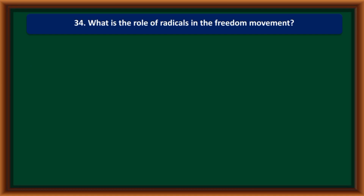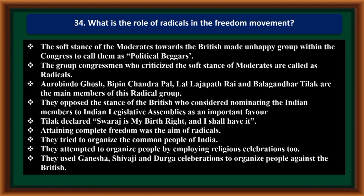What is the role of Radicals in the freedom movement? The soft stance of the Moderates towards the British made an unhappy group within the Congress call them political beggars. The congressmen who criticized the Moderates are called Radicals. Arvind Ghosh, Bipin Chandra Pal, Lala Lajpat Rai, and Bal Gangadhar Tilak are the main members. They opposed the British stance of nominating Indian members to the legislative assembly as a favor. They declared 'Swaraj is my birthright and I shall have it.' Attaining complete freedom was their aim. They organized the common people using religious celebrations like Ganesha, Shivaji, and Durga festivals to mobilize people against the British.